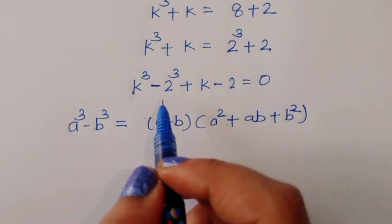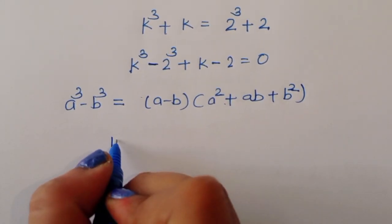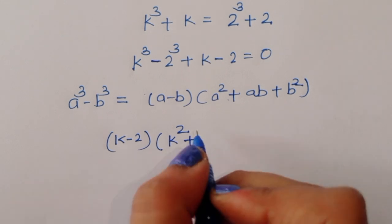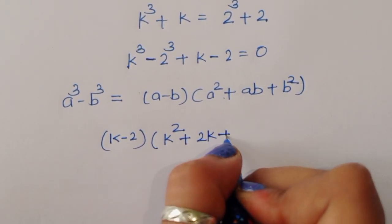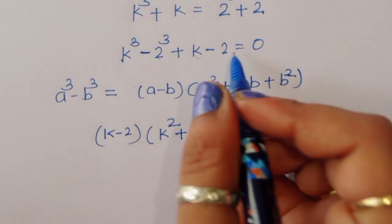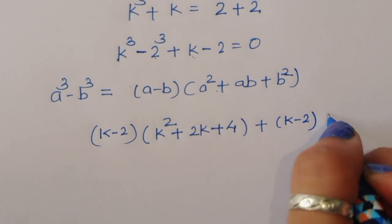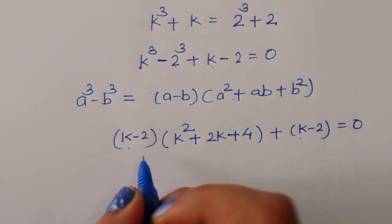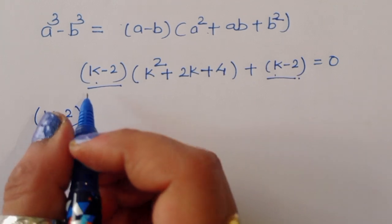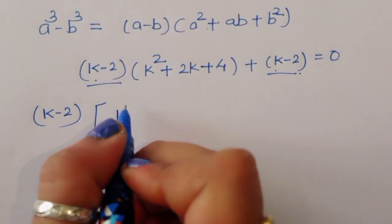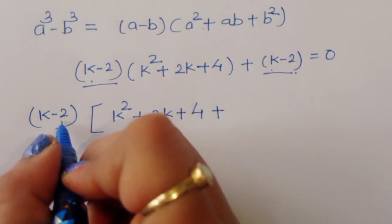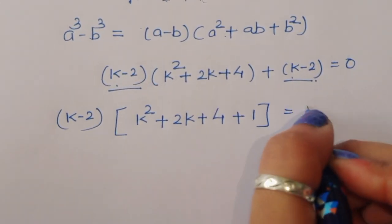Using this formula, k cubed minus 2 cubed equals (k minus 2)(k squared plus 2k plus 4). So the full expression becomes (k minus 2)(k squared plus 2k plus 4) plus (k minus 2) equals 0. Taking (k minus 2) common, we get (k minus 2)(k squared plus 2k plus 4 plus 1) equals 0.